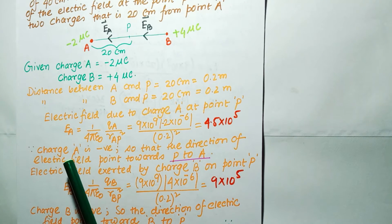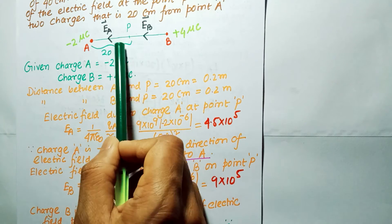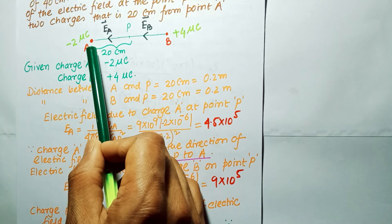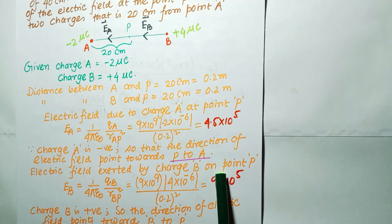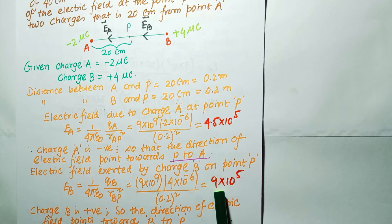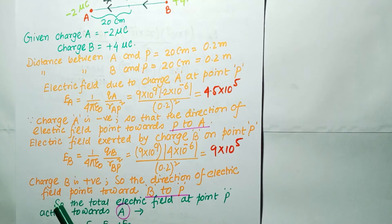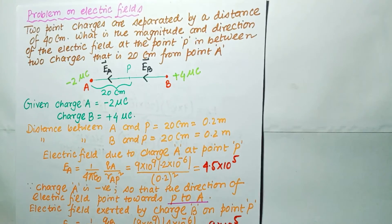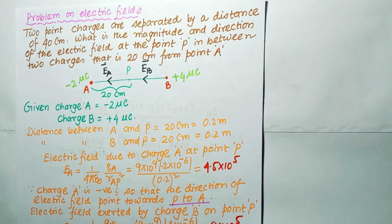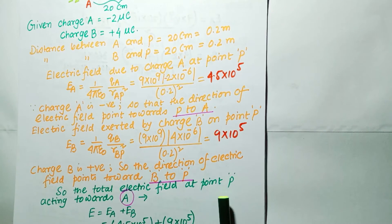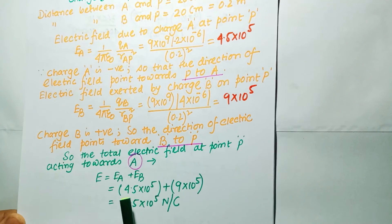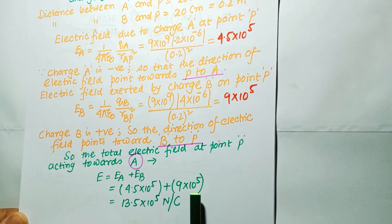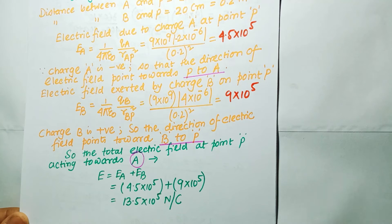Since the charge at A is negative, the direction of the electric field points from P toward A. The electric field Eb due to charge B at point P is Eb = (1/4πε₀)·Qb/Rbp² = 9×10⁵ N/C. Since charge B is positive (+4 microcoulomb), the electric field direction points from B toward P. Both Ea and Eb act in the same direction (toward A), so the total electric field E = Ea + Eb = 4.5×10⁵ + 9×10⁵ = 13.5×10⁵ N/C, directed toward A.